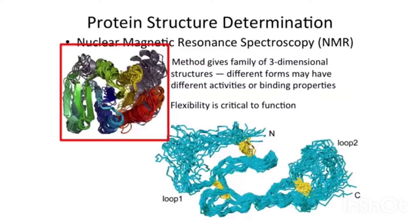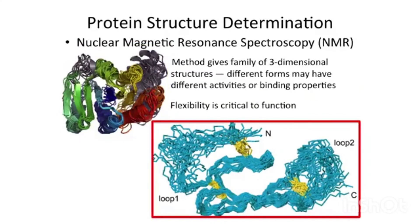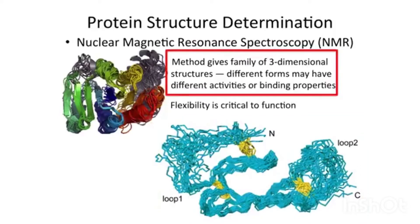Here we see one family of three-dimensional structures on the left. In fact, different forms of a given protein can have different activities or different binding properties based on that movement. That's particularly true in the loop regions that you see down here on the right, where loop one and loop two can take many different positions. Those different positions may alter the specific activity. NMR gives us this family of three-dimensional structures. It's not that crisp, clean X-ray crystallographic structure. Different forms may actually have different activities, different binding properties.